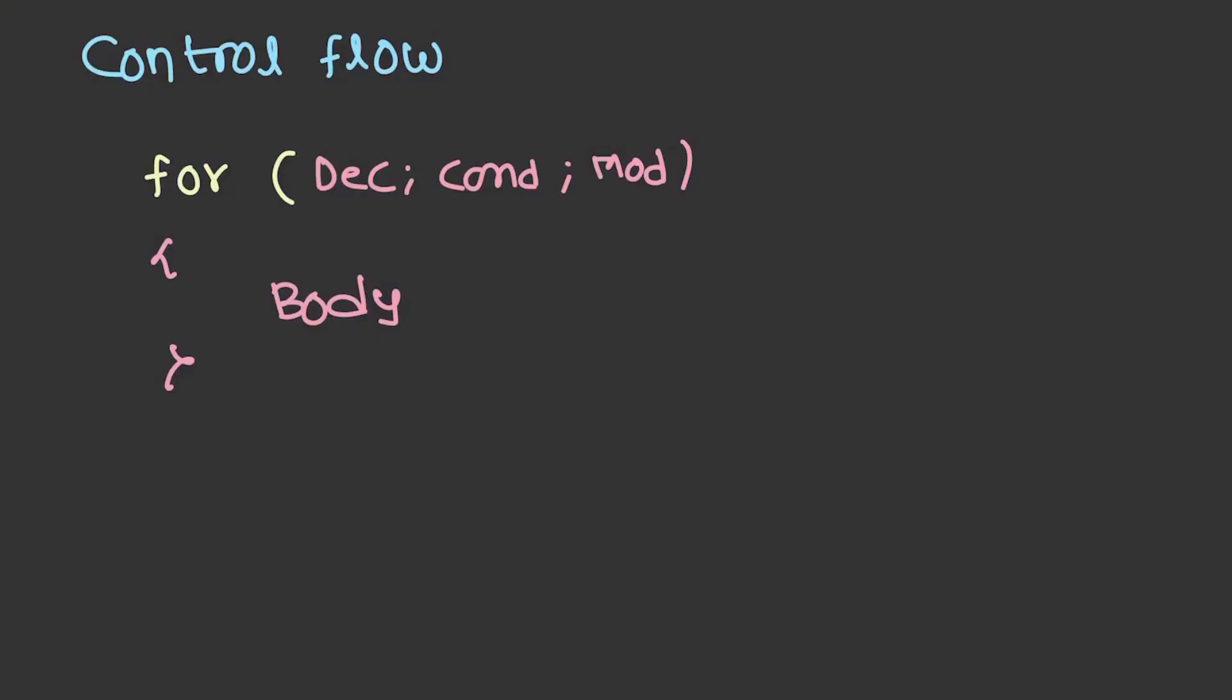We all know we have for, while, and do-while loops in programming languages, but what we tend to ignore or generally confuse is their control flow. Let's try to discuss the control flow.